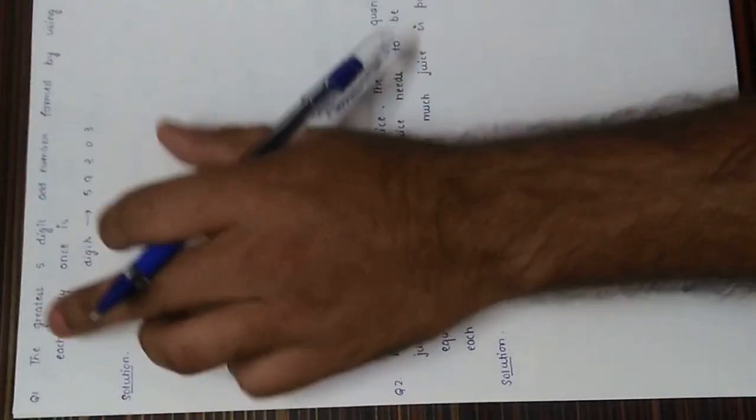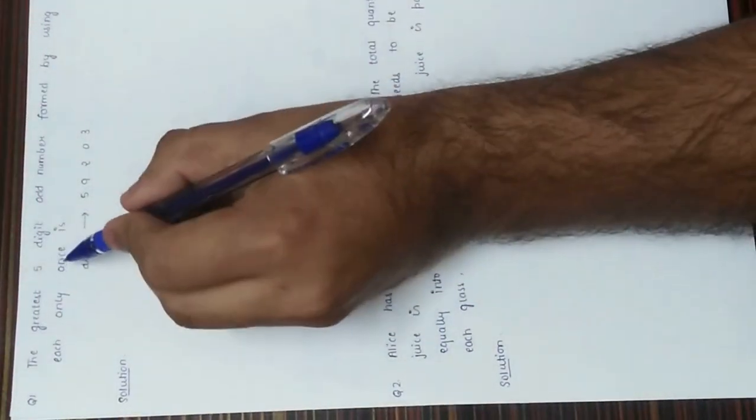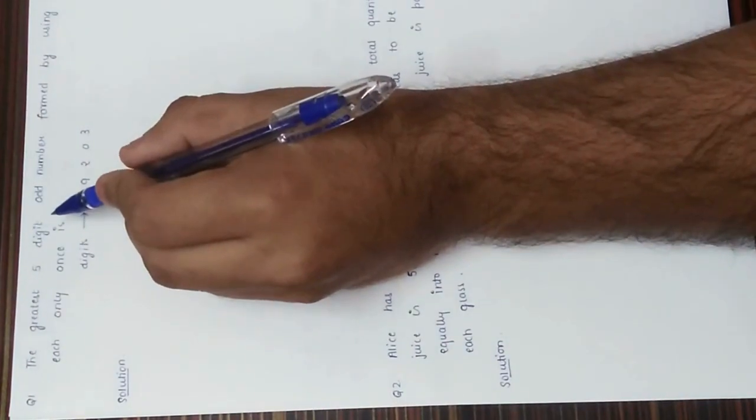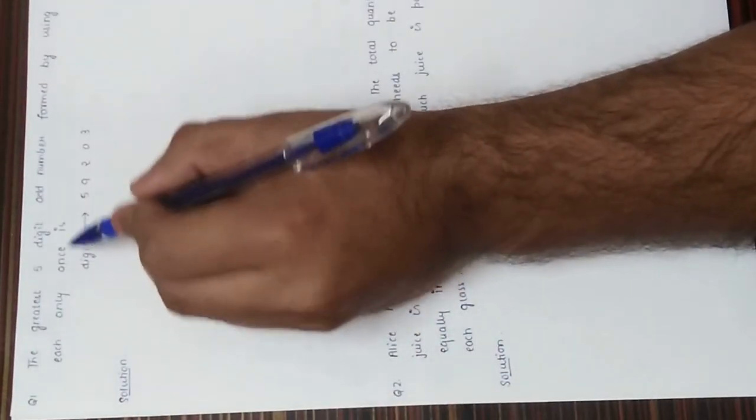Hello guys, welcome to Creative Learning with Aru and Nathar. Today we are going to practice some of the Olympiad problems in math. This is the first question: find the greatest five-digit odd number formed by using the digits each only once.